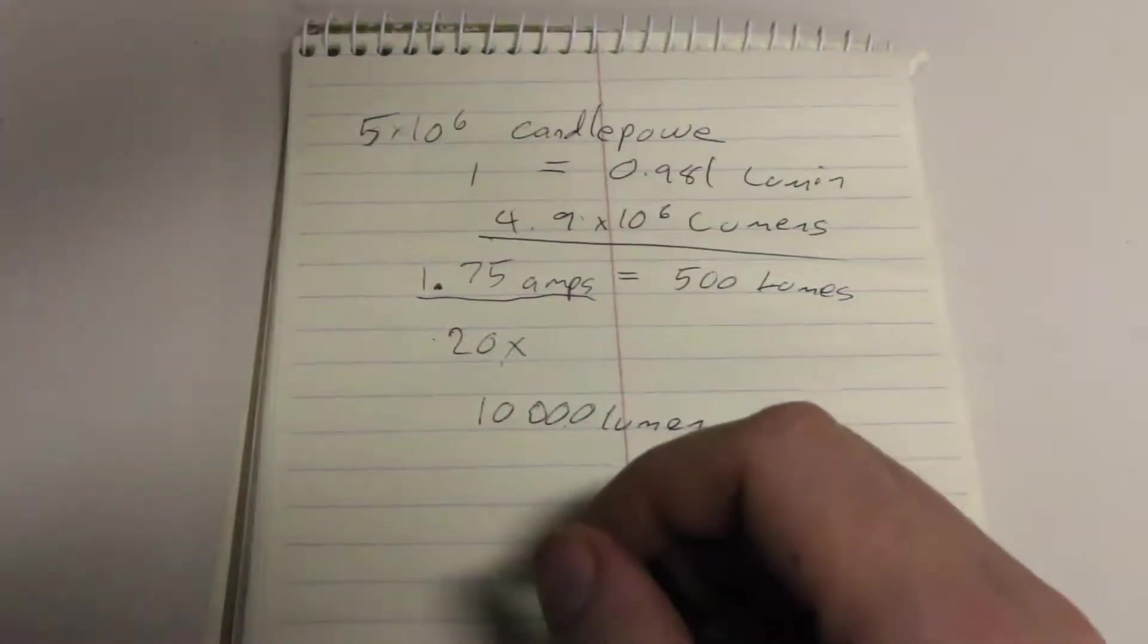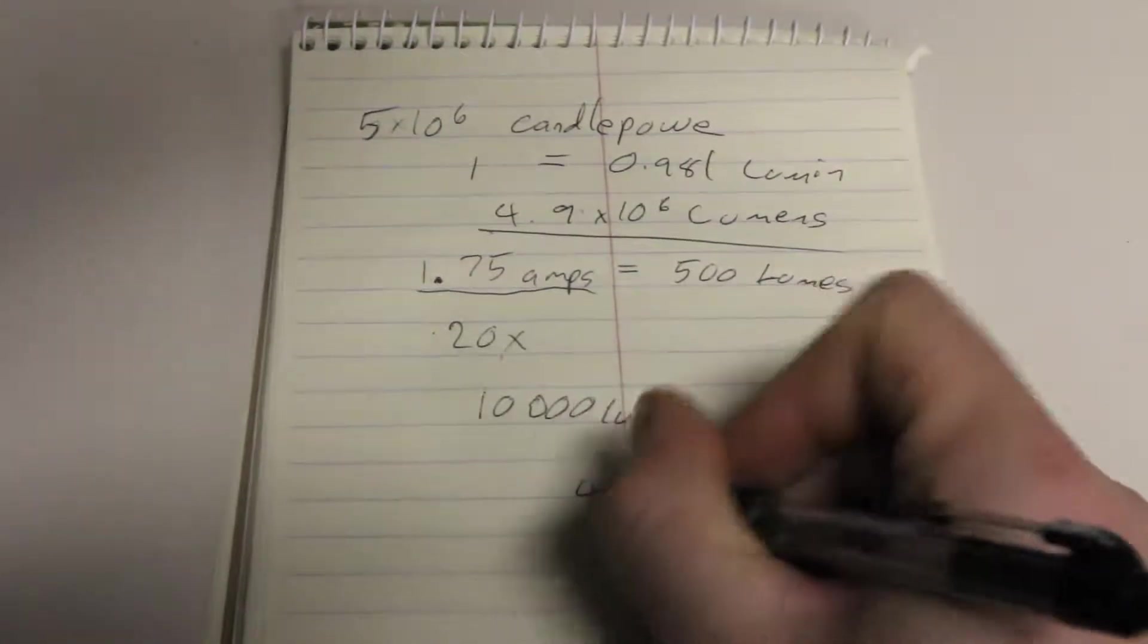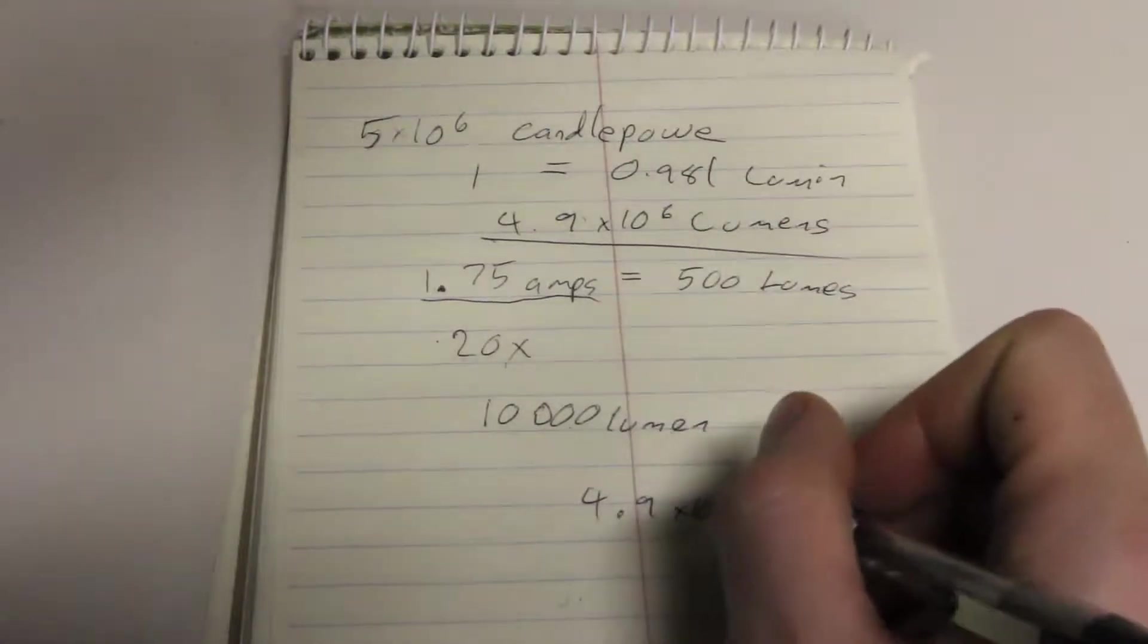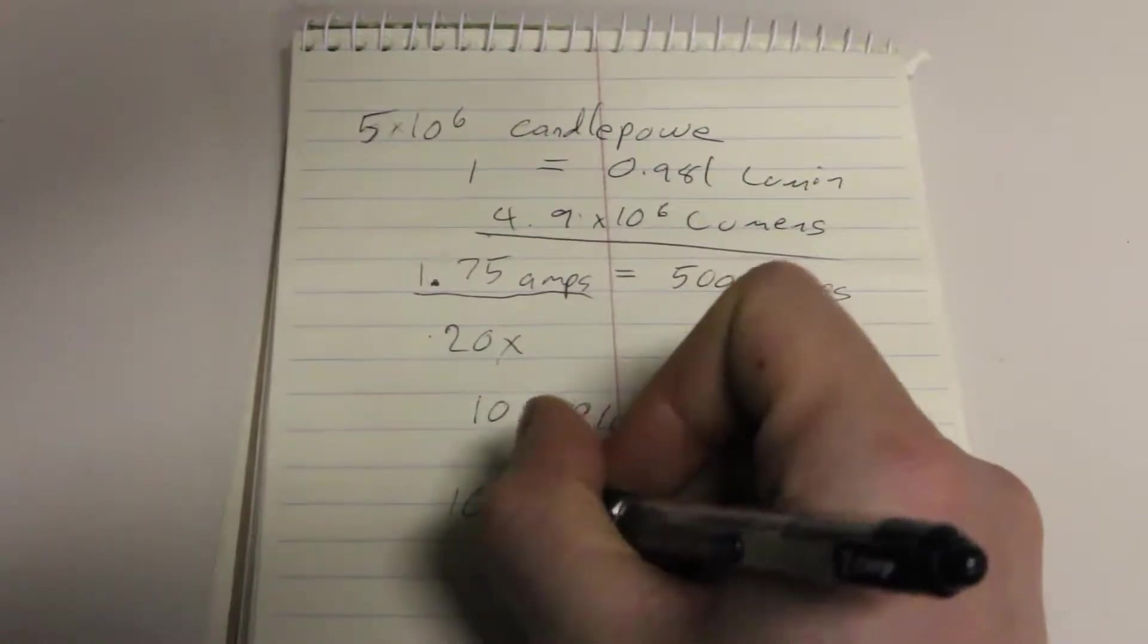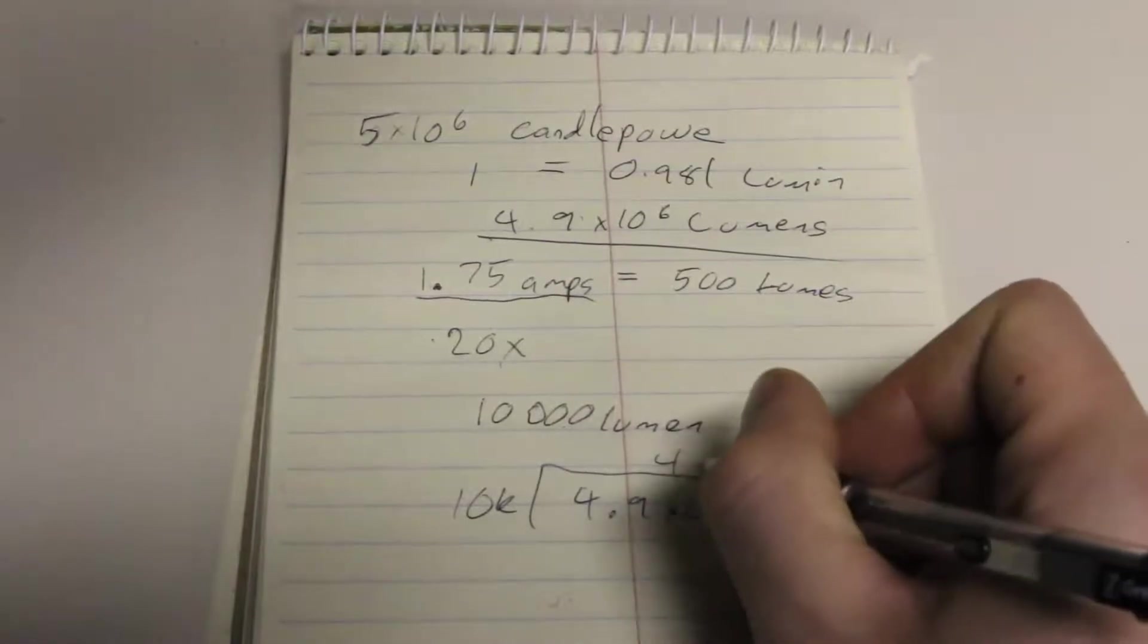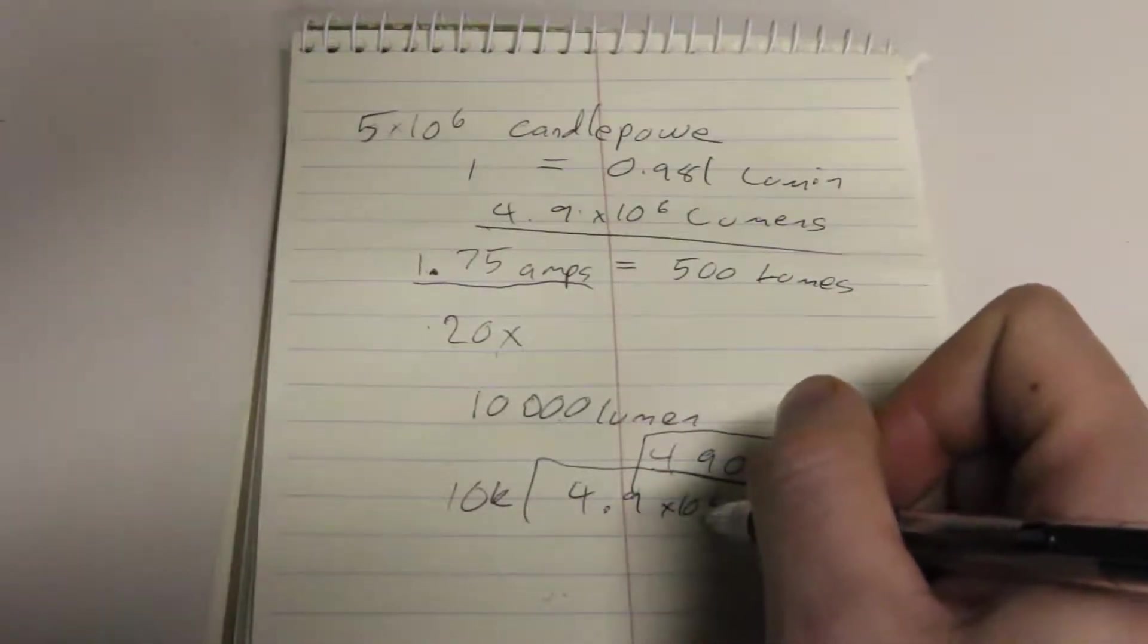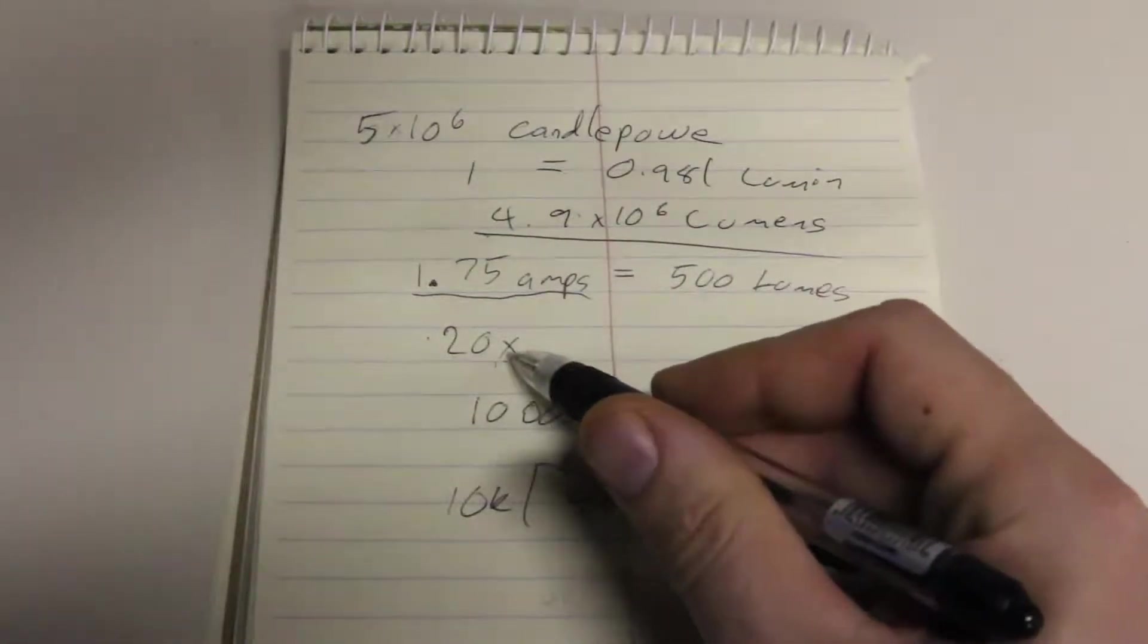So, if we take the 4.9 times 10 to the 6th lumens from the air gap flash, and we divide that by 10k lumens, we're going to get 490. And that would be the number of LEDs that we would need to produce the same amount of light as the air gap flash, if the LEDs can be overdriven at 20x.